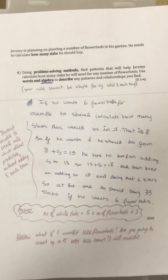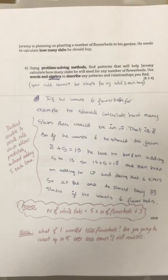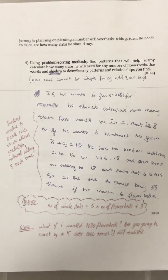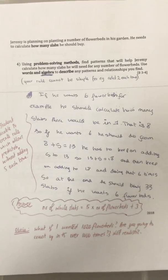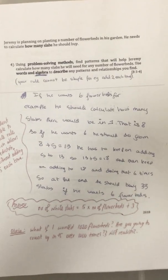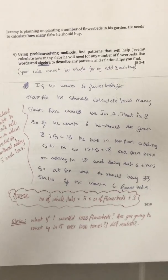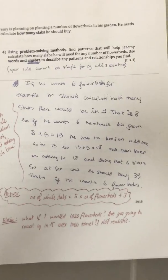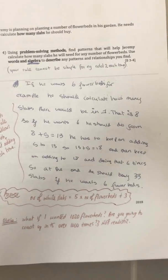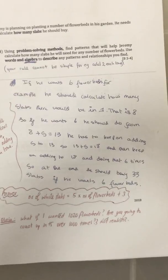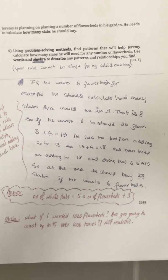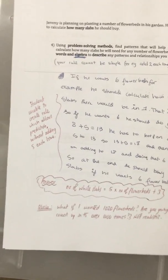The question says, using problem solving methods, find patterns to help Jeremy calculate the number of slabs. Use words or algebra to describe any patterns. This student did the classic approach: if he wants 6 flower beds, calculate from 1 flower bed which is 8, then add 5, add 5, add 5, add 5 — because they weren't able to come up with the general rule.